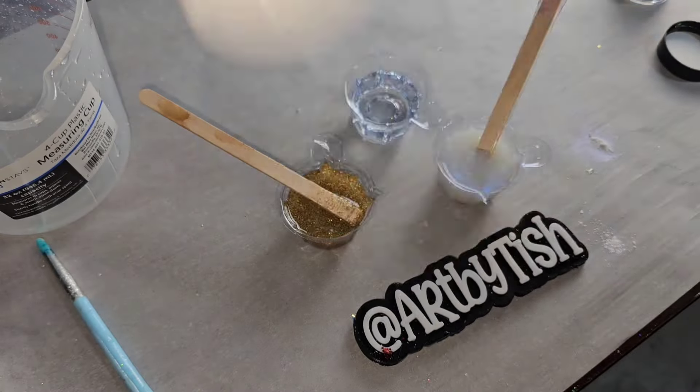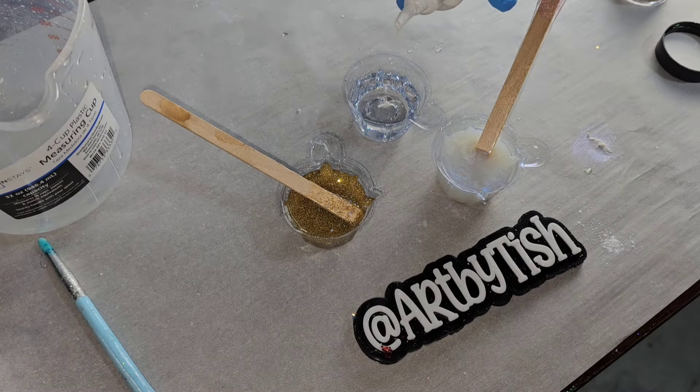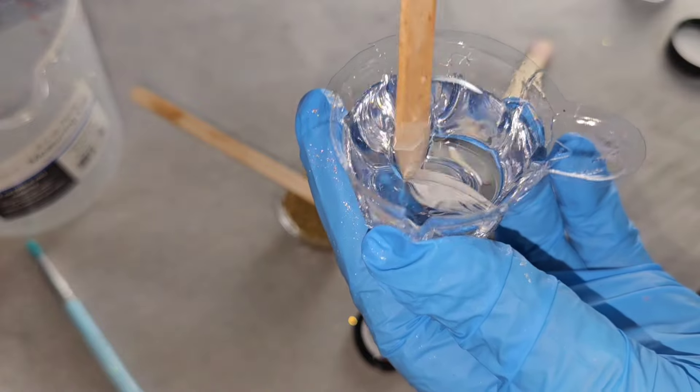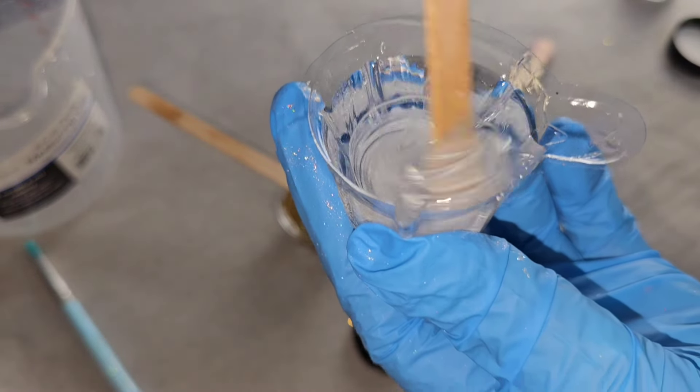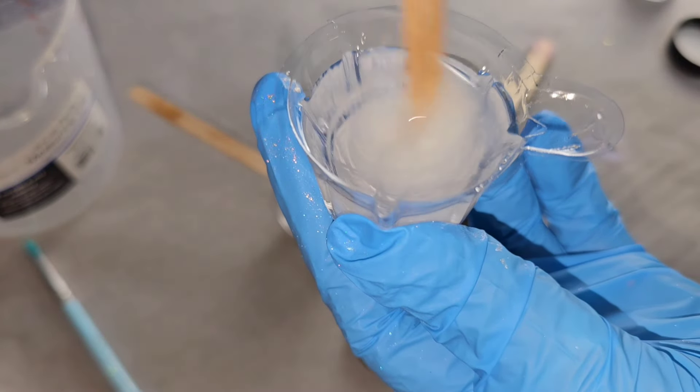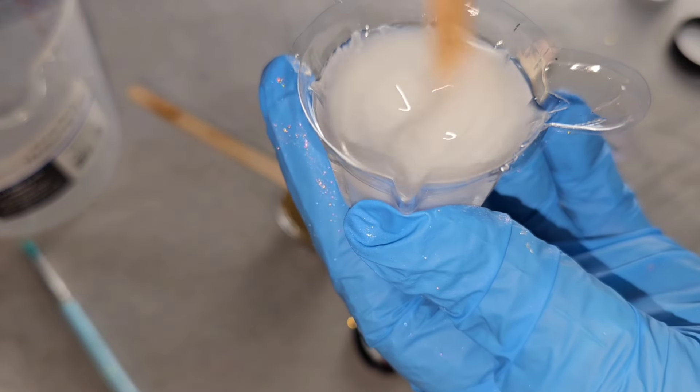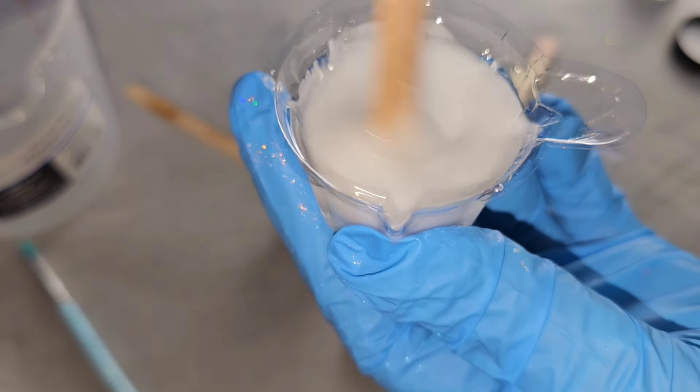I'm going to be using this ocean white today. This is also from Let's Resin. I poured one ounce of clear into this little cup. You can get these little cups from Let's Resin as well. Added one drop of that ocean white and you want to shake that jar up and I'm just going to mix it.